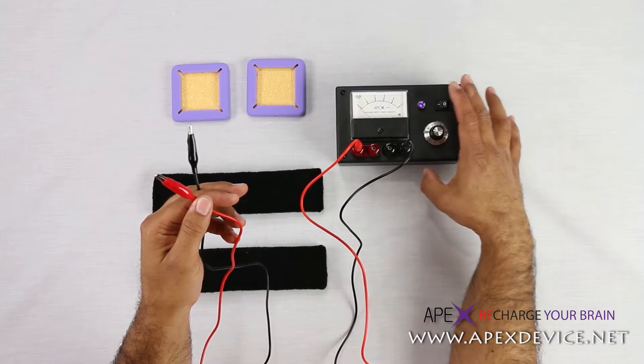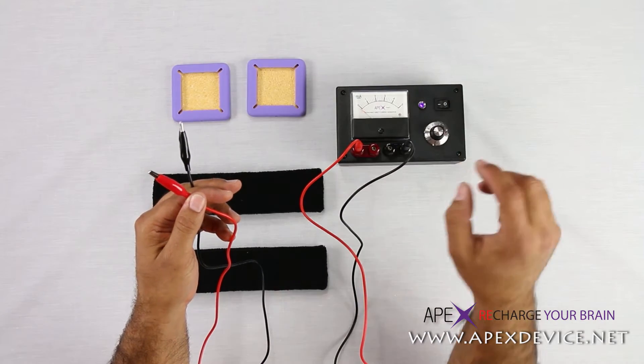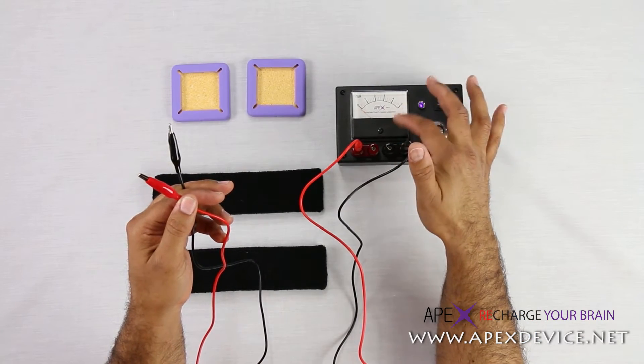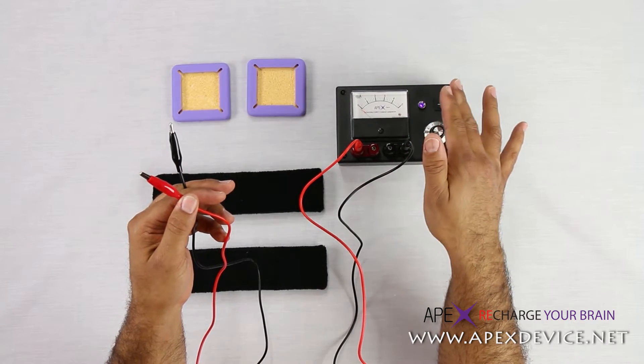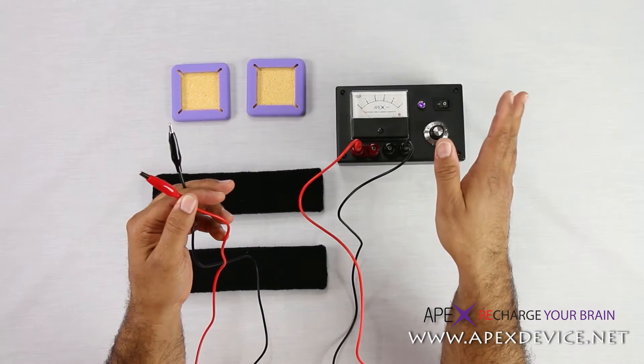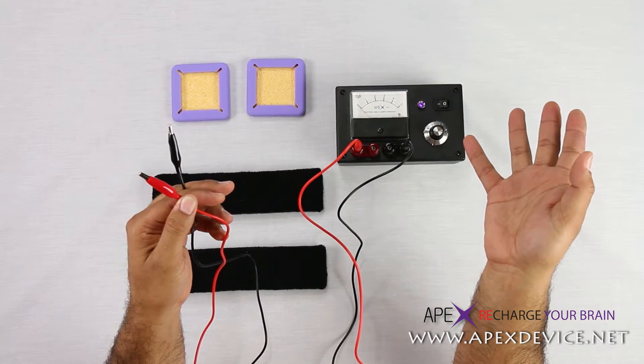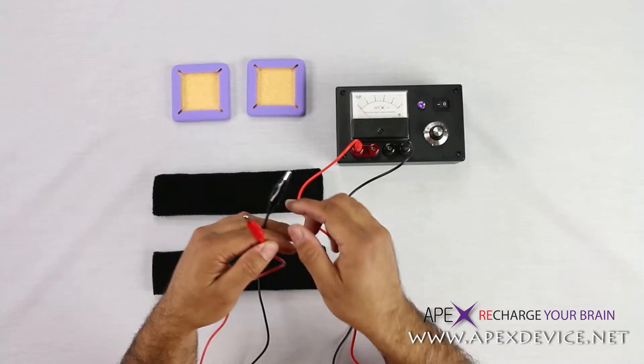When you turn the unit on, you're going to notice the LED is going to come on right there. But nothing is going to happen. The meter is not going to move. And that's by design. That's exactly how it's supposed to be. This meter only works if there's current flowing through the circuit. And there is no circuit right now. You don't have the circuit completed.